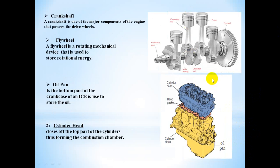Number five: the crankshaft. As shown in this figure — the crankshaft, the piston, the connecting rod, and the flywheel — the crankshaft is one of the major components of the engine that powers the drive wheels. The piston creates power using an up-and-down reciprocating motion, and the crankshaft converts this into circular or rotational motion.